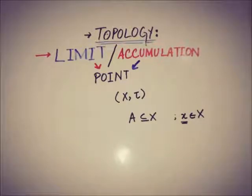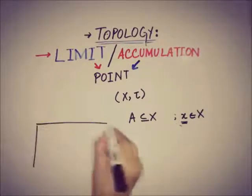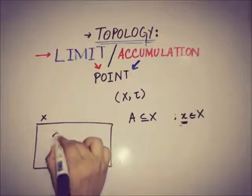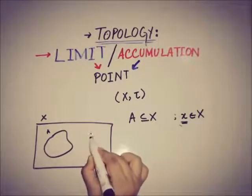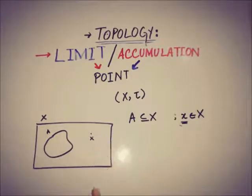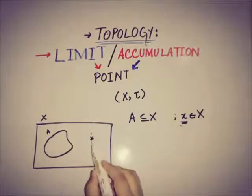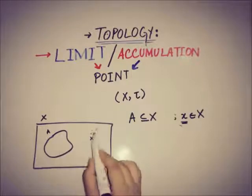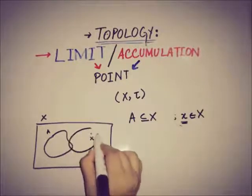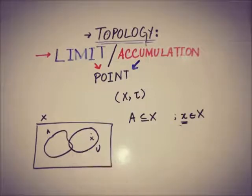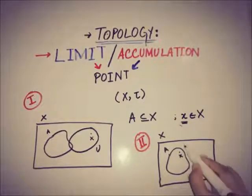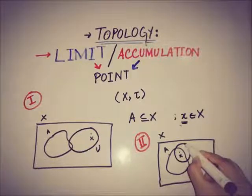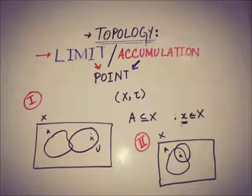There are two cases when we talk about limit or accumulation points. The first case is that the point x is outside of A, and any open neighborhood of x intersects with A at some point other than x. The other case is that the point x is in A, and any open neighborhood of x intersects with A at some point other than x. We will deal with both of these cases.